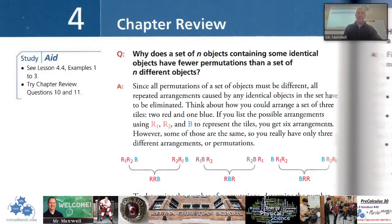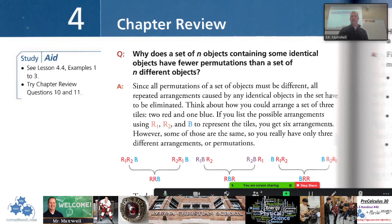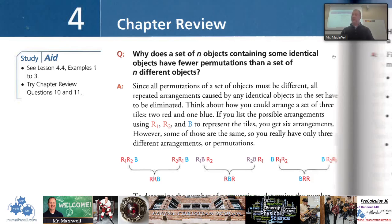Alright, so we're going to look at the review for Chapter 4. This is going to be for the entire chapter, everything kind of works together. As you notice here, this first question is technically from section 4.4, doesn't necessarily start out at 4.1. So let's just cover some of the important points for Chapter 4 in Foundations Math 30. The first question is, why does a set of n objects containing some identical objects have fewer permutations? Let me share my screen here for those that are at home. How's that, is that better?